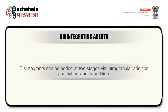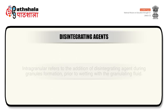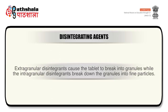Disintegrants can be added at two stages: intragranular addition and extragranular addition. Intragranular refers to the addition of disintegrating agents during granule formation, prior to wetting with the granulating fluid. Extragranular disintegrants are added at the second mixing stage during compaction of granules into the tablet. Extragranular disintegrants cause the tablet to break into granules, while intragranular disintegrants break down the granules into fine particles.